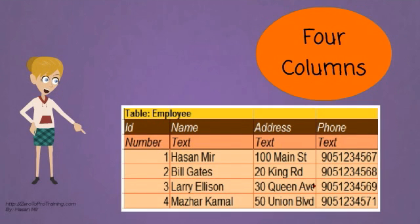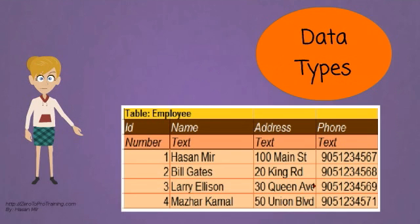For example, this table has four columns. Each column has a data type given to it. The id column has a number data type assigned to it as it will contain numbers. The rest of the columns have text data type given to them as they will hold text values.